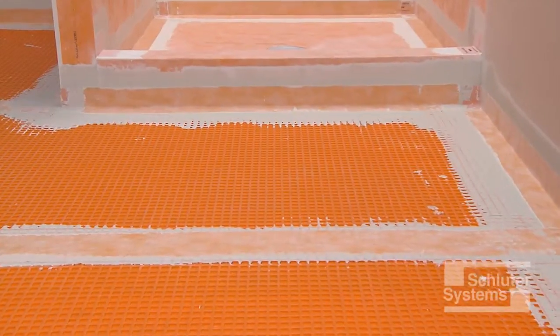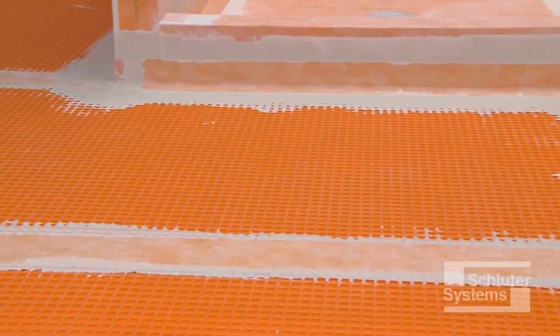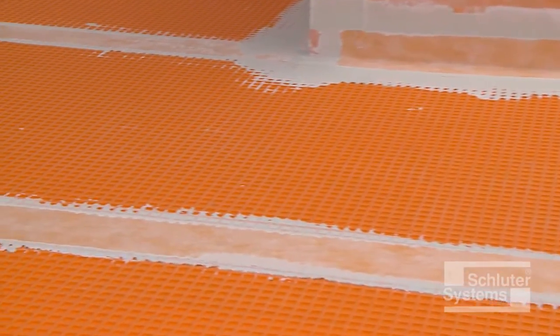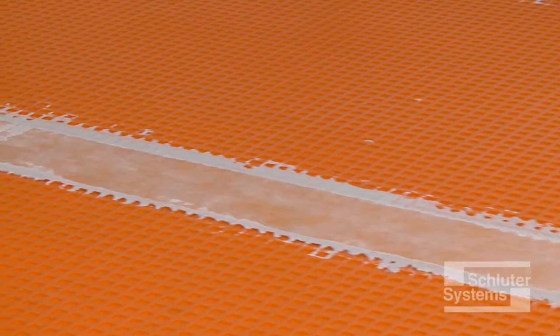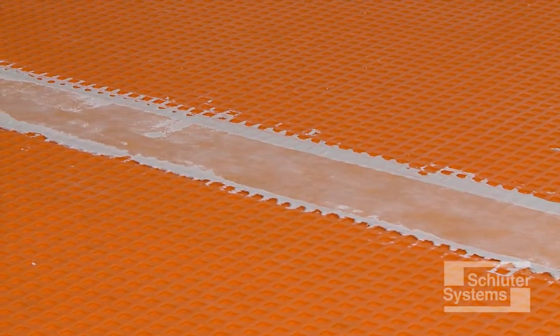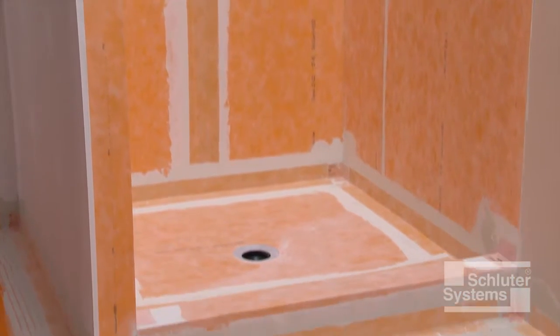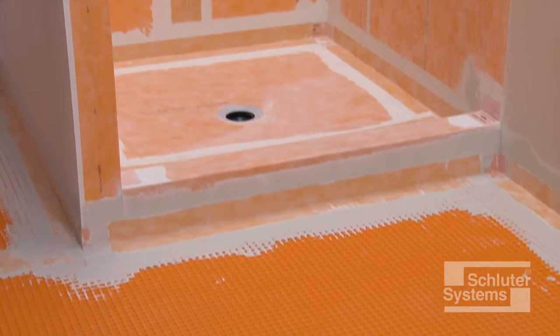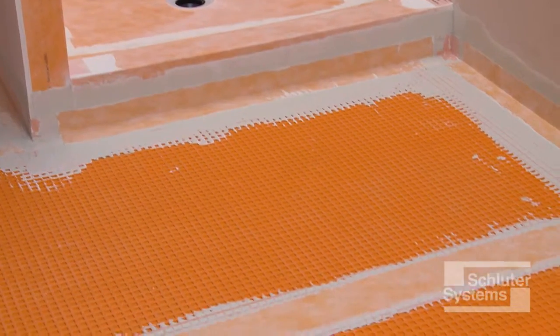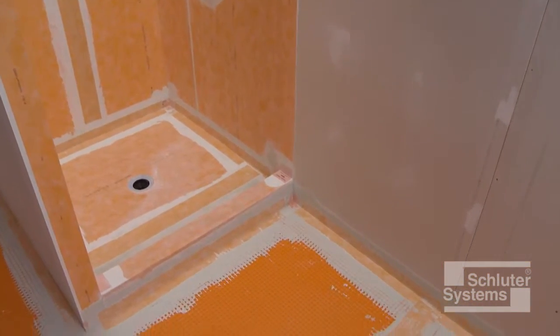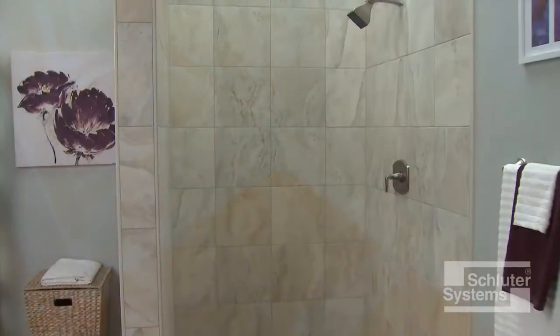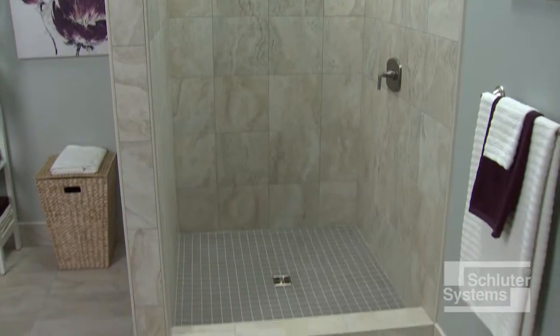This process is repeated at floor-to-wall transitions and joints in the DITRA matting, ensuring that a minimum 2-inch overlap is achieved at all transitions. Sealing seams in the DITRA and connections to the shower assembly improves the overall utility of the bathroom by providing comprehensive waterproofing in an area that is repeatedly exposed to moisture.